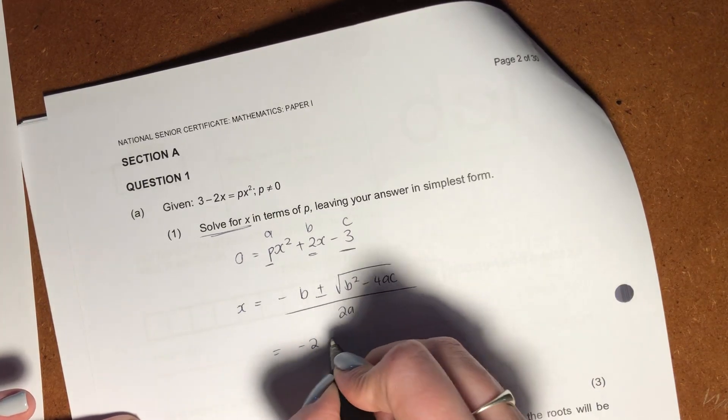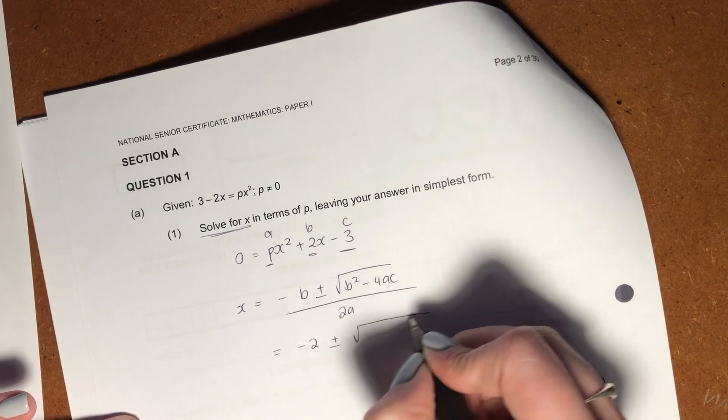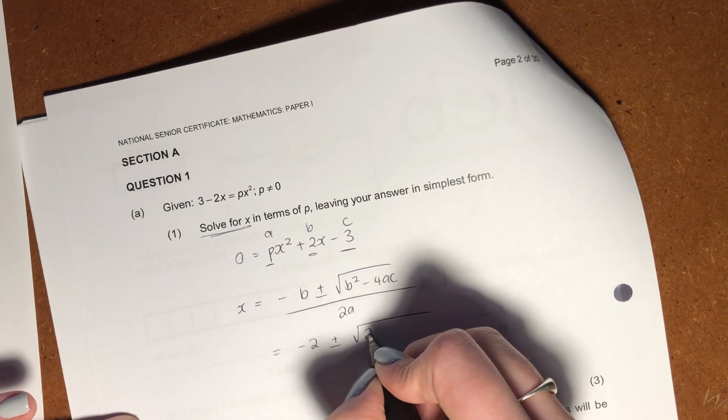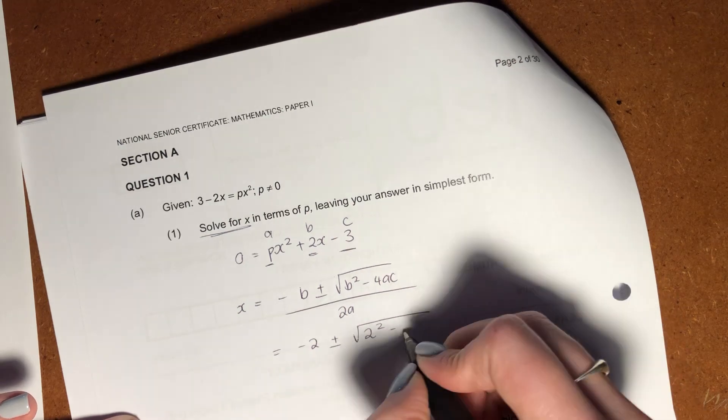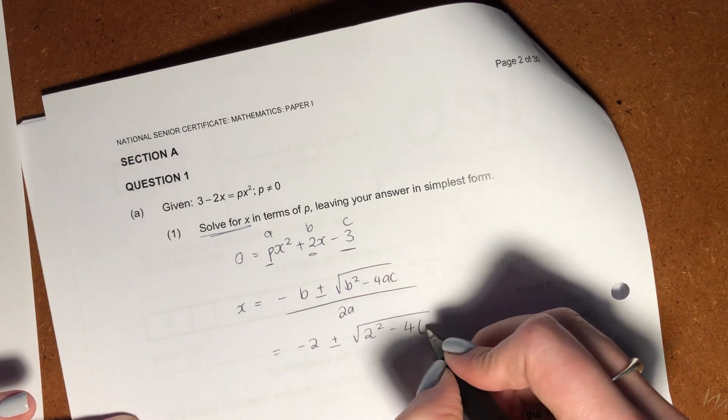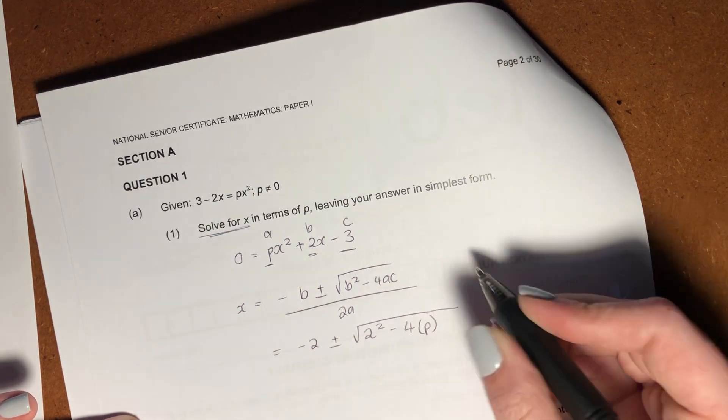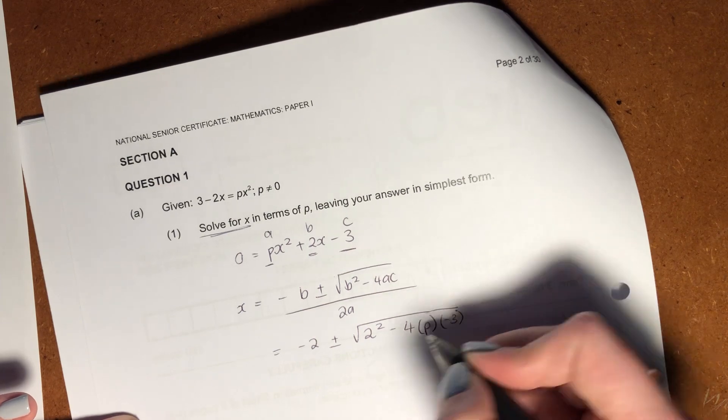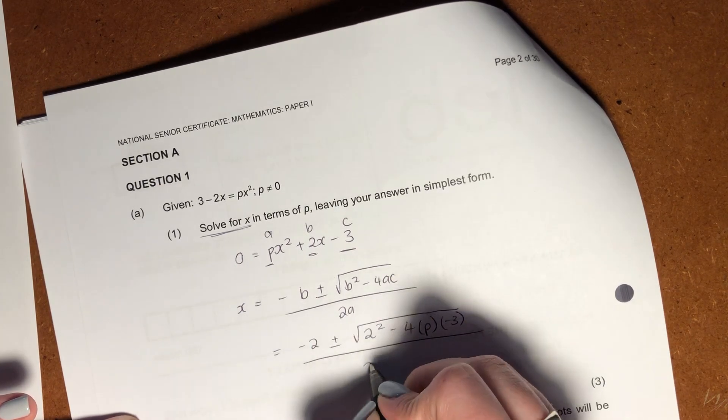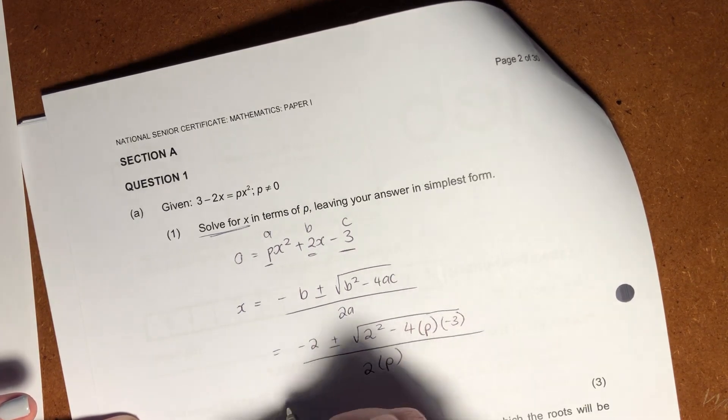So I'm just going to write out the equation here just so that you see this is all from the formula sheet. So don't be thinking, oh goodness, where is she getting this from? It's all from the formula sheet and then I'm going to take each of those values which I've said are a, b and c and sub them in. So b is going to be 2 plus minus, then it's going to be 2 squared minus 4. What's a? a is p. What is c? It is negative 3. Then what is a? We know is p.